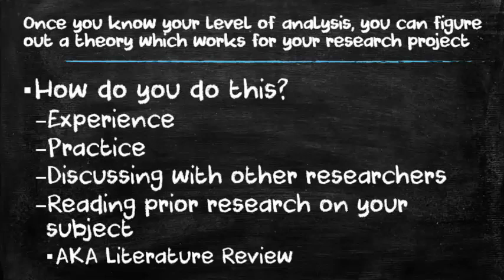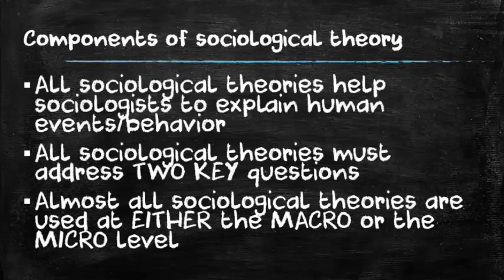So you've figured out whether you're at the macro level or the micro level, and that helps you further narrow down your theory choice. In the field of sociology, there are particular components we have to look for within our theories. All sociological theories help to explain human events and behavior — how we interact with each other and how we interact with the structure. There is actually a third level of analysis called the meso level, but with just a handful of exceptions, every sociological theory fits into either the macro or the micro.